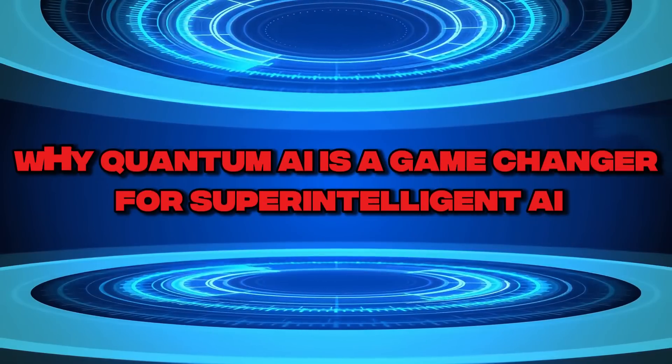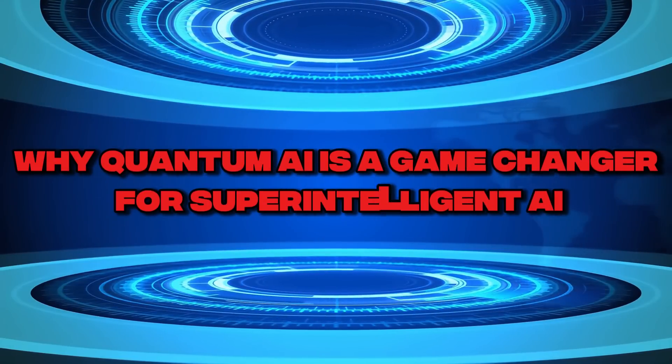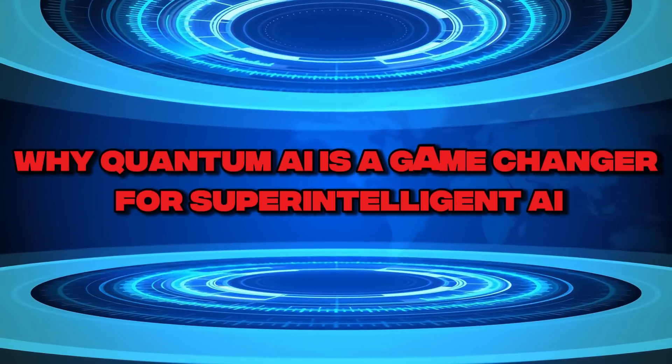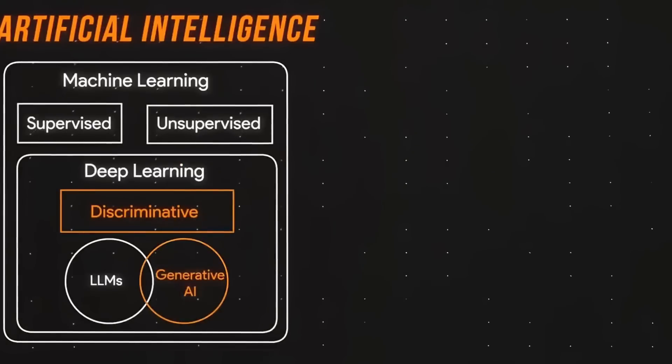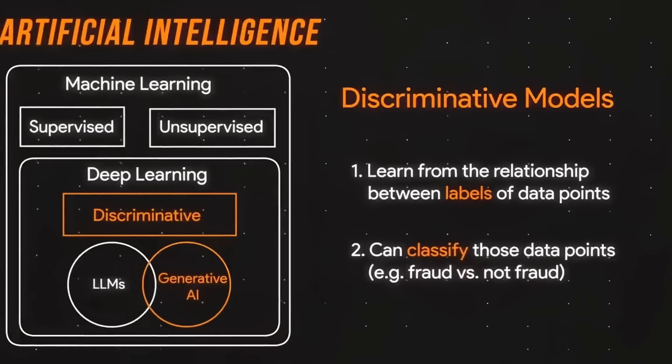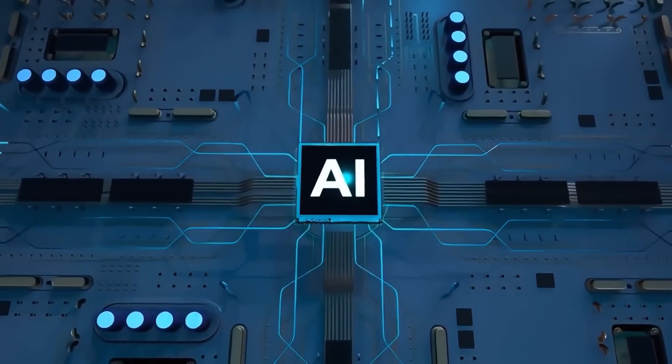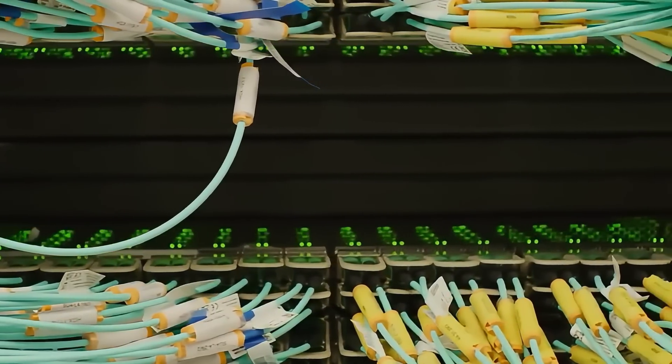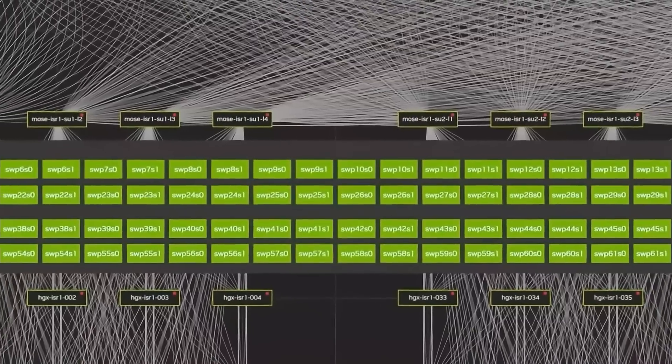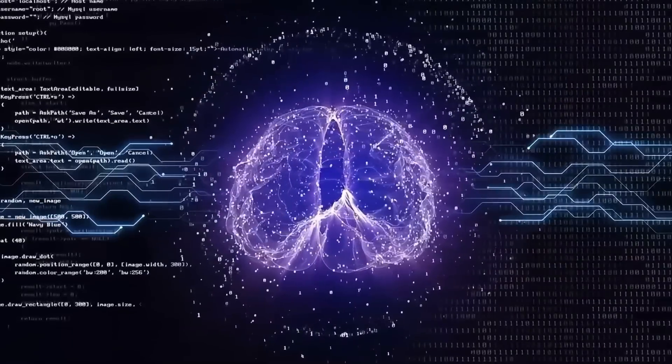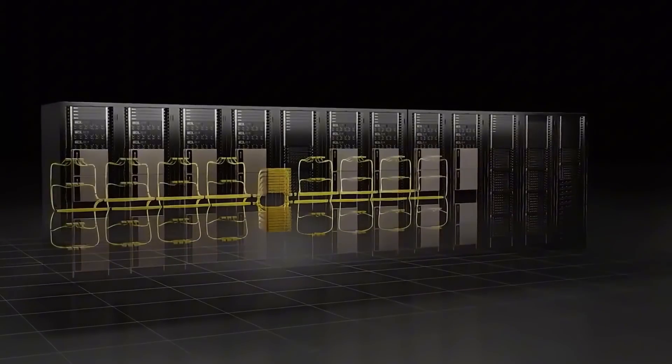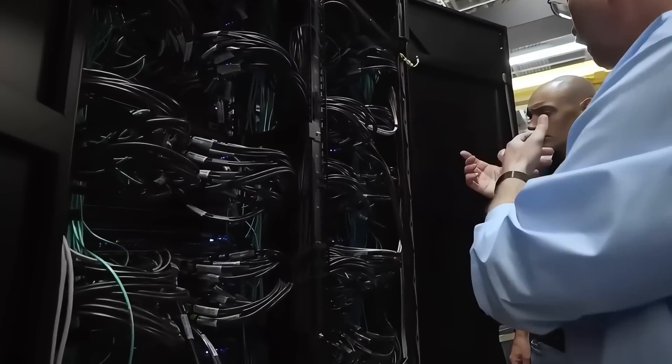Why quantum AI is a game-changer for superintelligent AI. Traditional AI, despite its rapid advancements, is fundamentally limited by the constraints of classical computing. Even the most powerful AI models today are bottlenecked by processing speed, memory, and energy consumption. Training advanced AI models requires immense computational power, often taking weeks or even months to complete. This is where quantum AI changes everything.